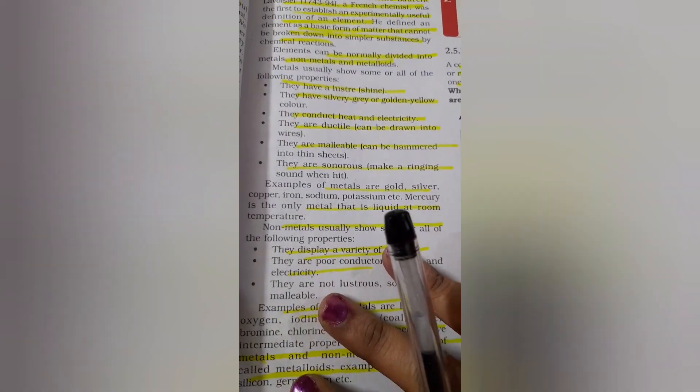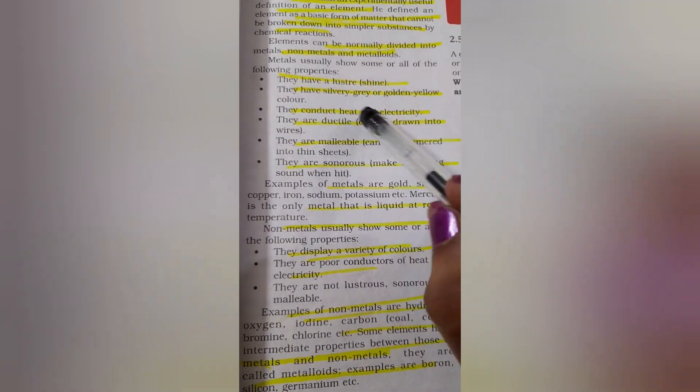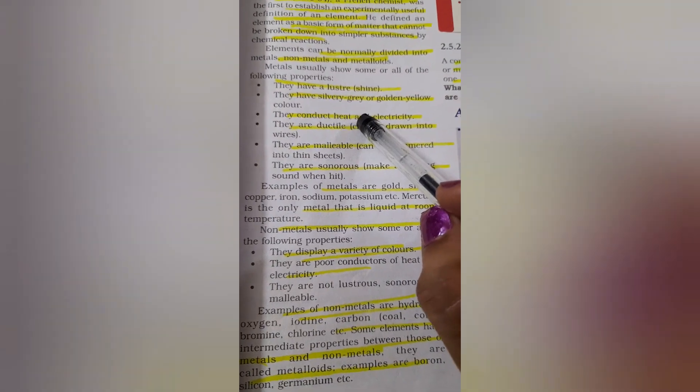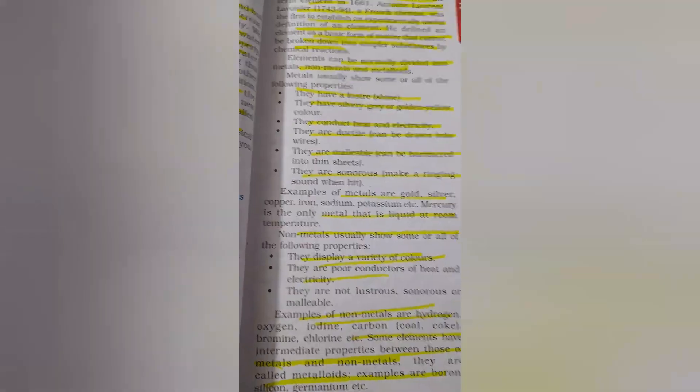We will see some properties of metals. These properties are shown by only metals. They have shining or luster, then they have got silvery gray, golden yellow and golden yellow color.